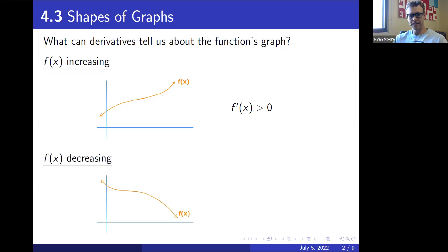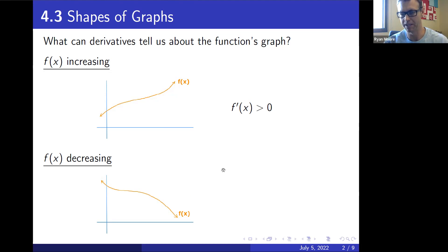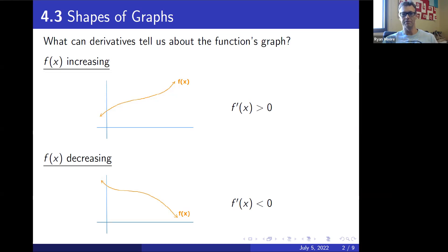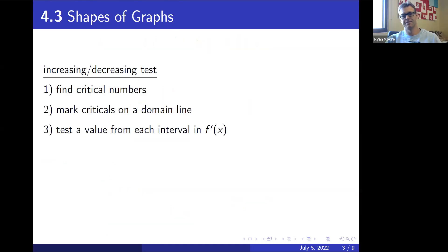Similarly, if f(x) is decreasing — going down from left to right — then at any point the slope of the tangent line would be pointed downward, meaning f'(x) would be less than zero, negative. So if you give me an x value and I plug it into the derivative, a positive result means the function is increasing there, and a negative result means the function is decreasing there. This leads to what we'll call the increasing and decreasing test.